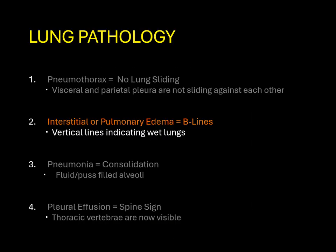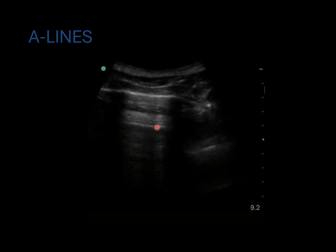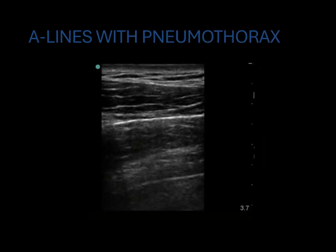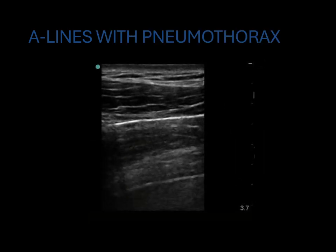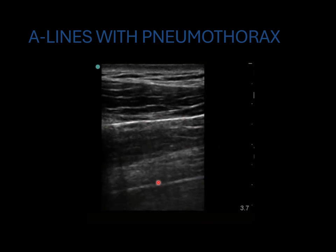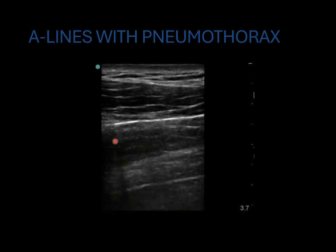Next, we'll talk about interstitial or pulmonary edema as indicated by B-lines. As a refresher, A-lines are the horizontal lines created from the reverberation artifact between the pleura and the probe-skin interface — this is normal. Although A-lines are normal, you still need lung sliding to indicate there is no pneumothorax. Here we see no lung sliding along the pleural line but still see A-lines, so A-lines cannot independently rule out pneumothorax — you must look for lung sliding.